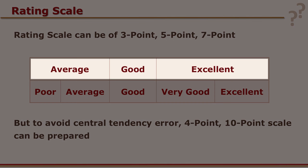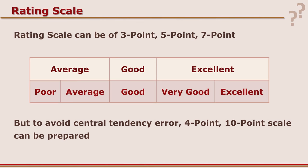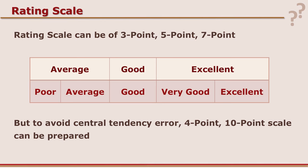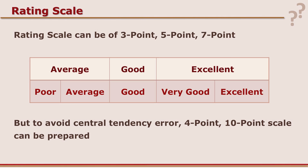Rating scale can have 3 points, 5 points, 7 points or 10 points. For example, a 3 point scale can have average, good and excellent. A 5 point scale can have poor, average, good, very good and excellent. If you have a middle point there is a tendency to mark there — this is called a central tendency error. To avoid that, instead of odd numbers we can use even numbers, such as a 4 point or 6 point scale, but generally odd numbers are used.